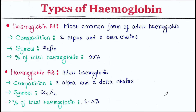There are different types of hemoglobin. Hemoglobin A1 is the most common form of adult hemoglobin. Its composition contains two alpha and two beta chains, so the symbol is alpha-2 beta-2. The percentage of hemoglobin A1 is 90 percent of total hemoglobin present in our blood.